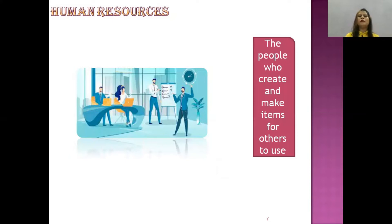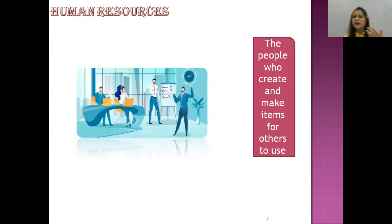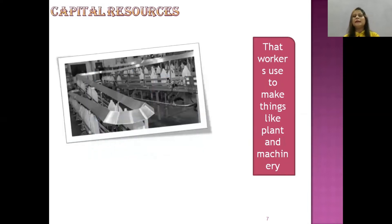Human resources are the people who create and make items for others to use. In every work where there is manpower involved, that is called human resources. Capital resources are the plant and machinery — the assets that workers use to make things.